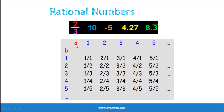When we consider two numbers a and b, any number of rational numbers can be obtained in the form of a/b, as you can see here.